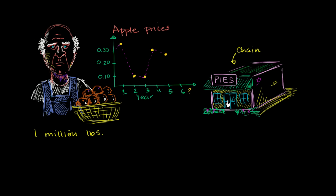So what they can do is, let's say we have the harvest coming up. The farmer is kind of afraid - what if the price goes back down to 10 cents per pound? Then he's going to go broke. The pie chain is afraid - what if the price goes up to 30 cents a pound? Then these guys are going to go broke.